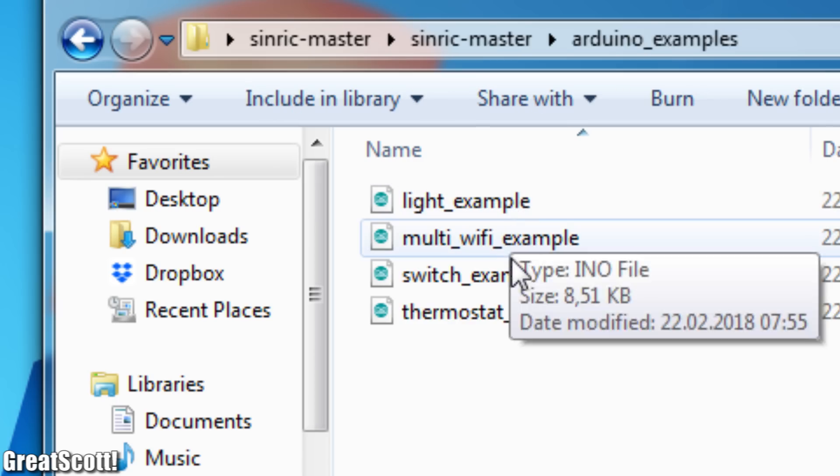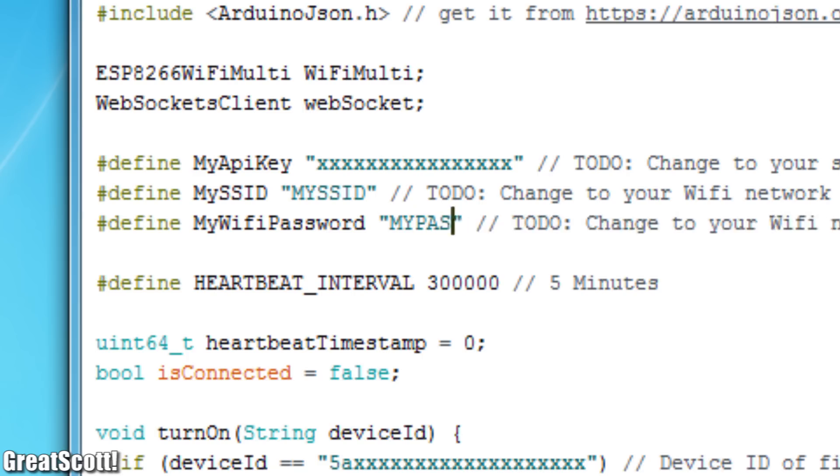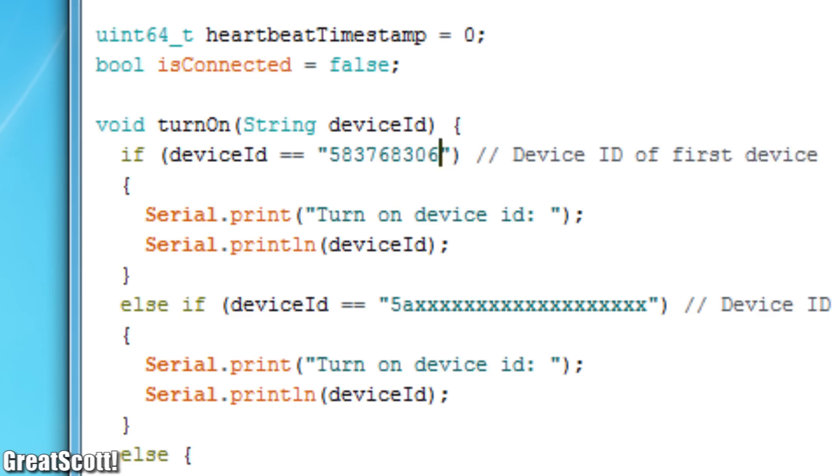After unpacking I opened the switch example and downloaded/included the two libraries which were mentioned in the code. Afterwards I added my Wi-Fi information along with the API key for my SinRic account as well as the API key for my Light switch to the code.